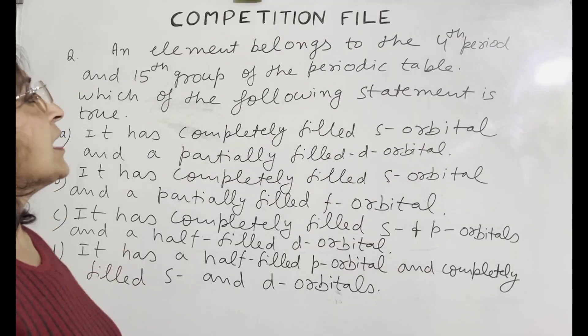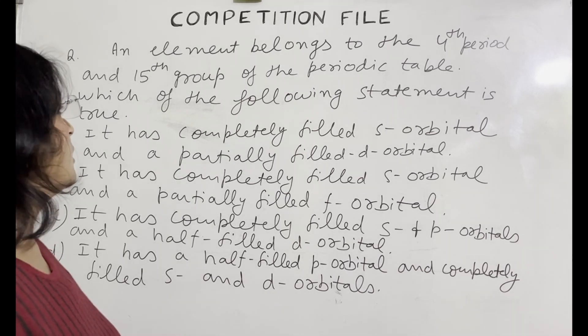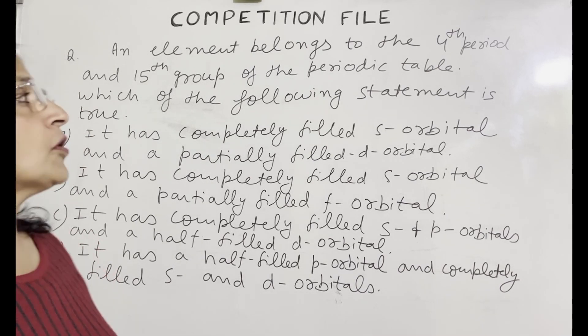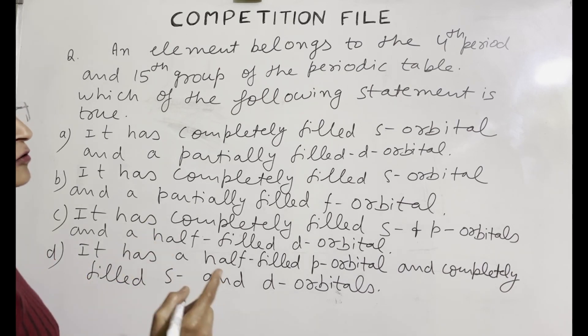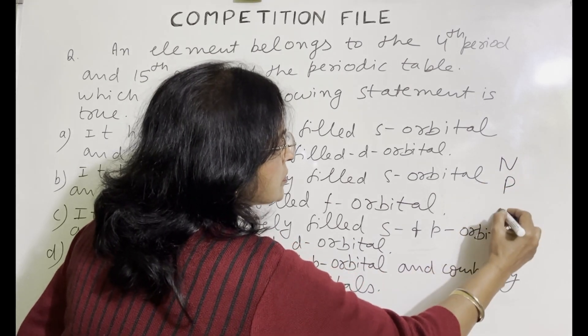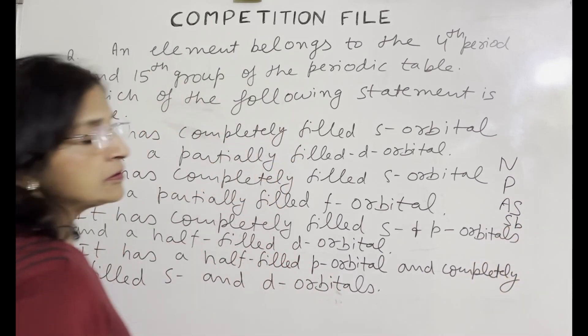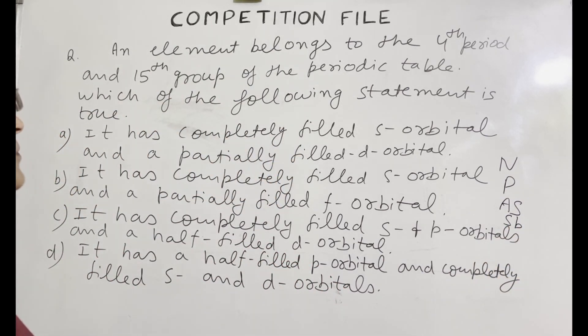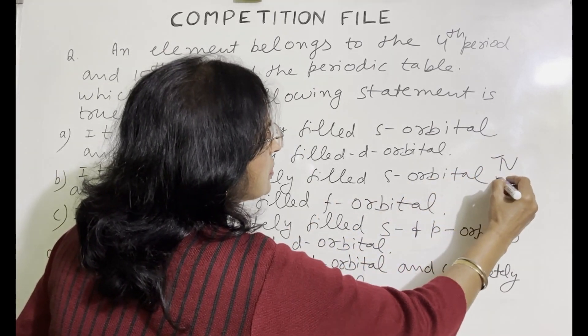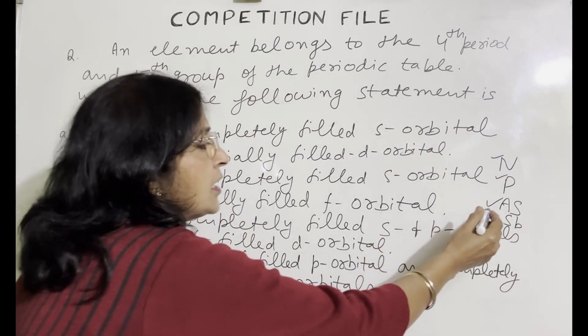Next question is, an element belongs to the 4th period and 15th group of the periodic table, which of the following statement is true? Group 15 is in the P block. And 15th group is the nitrogen family. So we will write elements, nitrogen, phosphorus, arsenic, antimony and bismuth. These are the 15th group elements. Nitrogen is in 2nd period, phosphorus is in 3rd period and arsenic is in 4th period. So the element is arsenic.